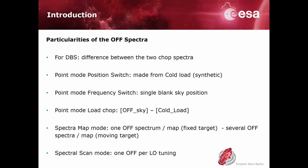For point mode load CHOP, it is the difference between the blank sky position and the code load. For spectral map mode, you will find one Off spectrum pair per map for a fixed target, but for a moving target, you will find several Off spectra per map. These Off spectra will also be moving on the sky at the same rate as the moving target. Finally, for spectral scan mode, you will find one Off pair per tuning.